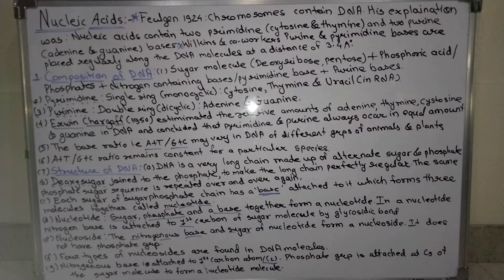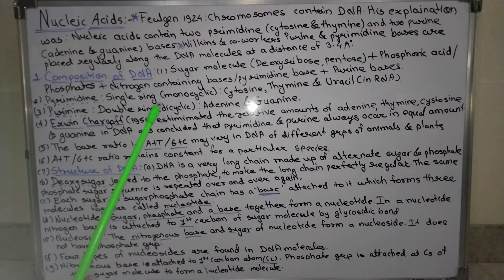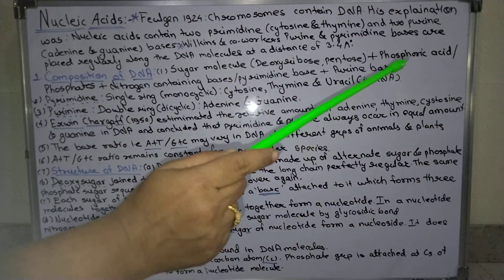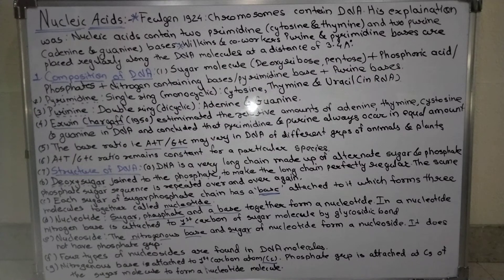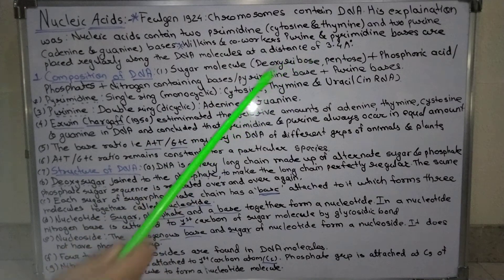Now, the composition of DNA: the sugar molecule is deoxyribose, which is a pentose (five-carbon) sugar. 'Deoxy' means one oxygen is less compared to ribose. So the sugar molecule is deoxyribose pentose. Plus, there is phosphoric acid and nitrogenous bases - pyrimidine bases and purine bases.